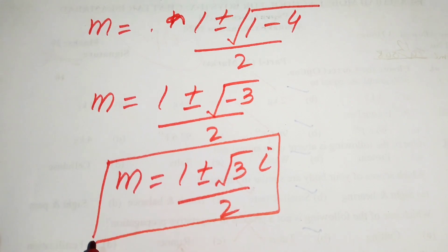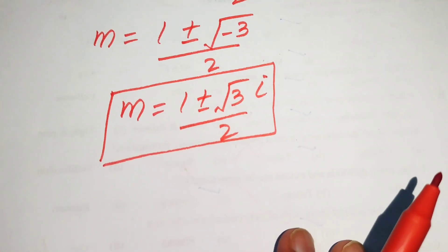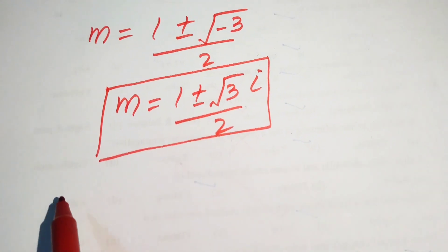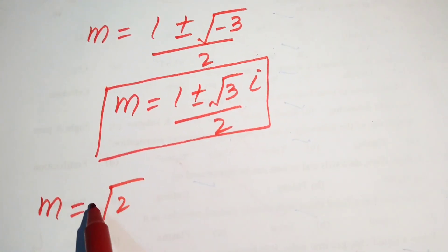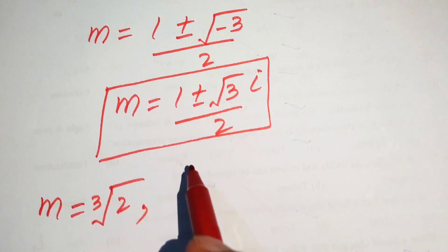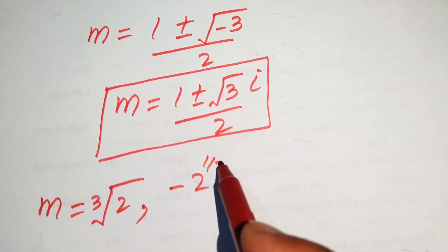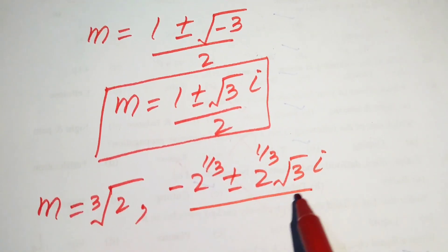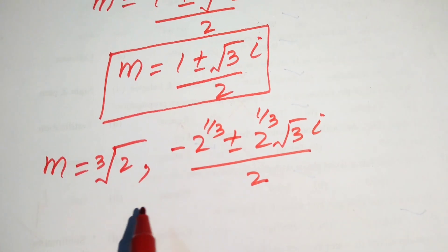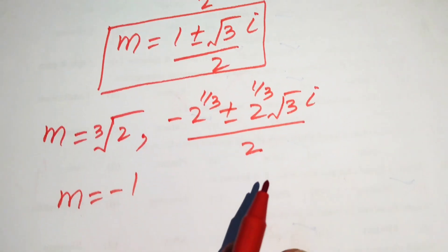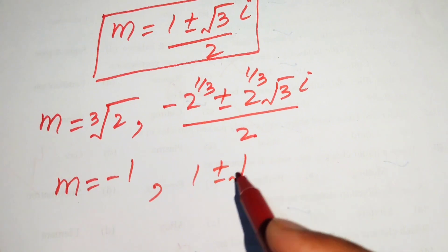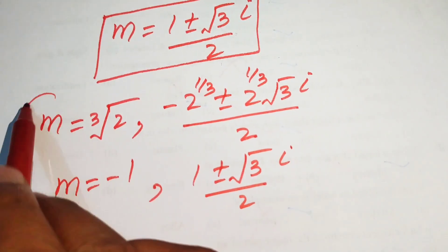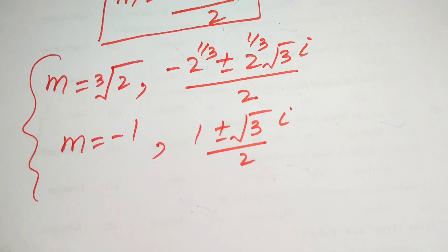Finally, we have all six solutions of the given equation: m equals 2^(1/3) (the cube root of 2), m equals (minus 2^(1/3) plus or minus 2^(1/3) · root 3 · i) over 2, m equals minus 1, and m equals (1 plus or minus root 3 · i) over 2. These are the six total solutions, and this is the final answer. Thank you for watching — please subscribe for more videos.